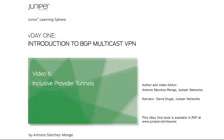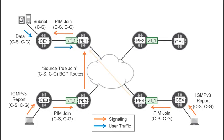Video 6: Inclusive Provider Tunnels. This video describes task number 6 of this introduction to multicast VPNs. The customer multicast traffic arrived at PE1, but it stopped there. You need a provider tunnel rooted at PE1 to transport this multicast data through the core.